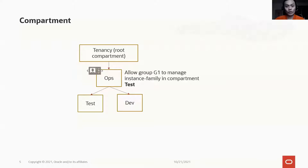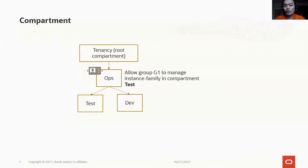When you create a policy, you need to specify which compartment to attach it to. In this diagram we created a box compartment and two sub-compartments called tasks under it. We also created an IAM policy to allow group G1 to manage instance families in the tasks compartment.